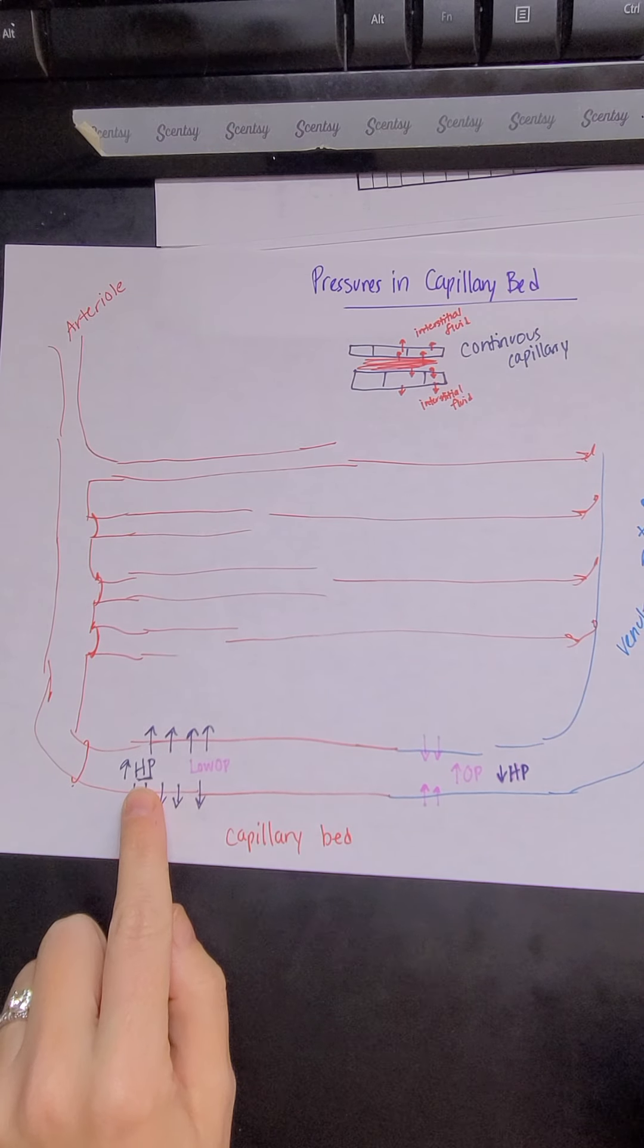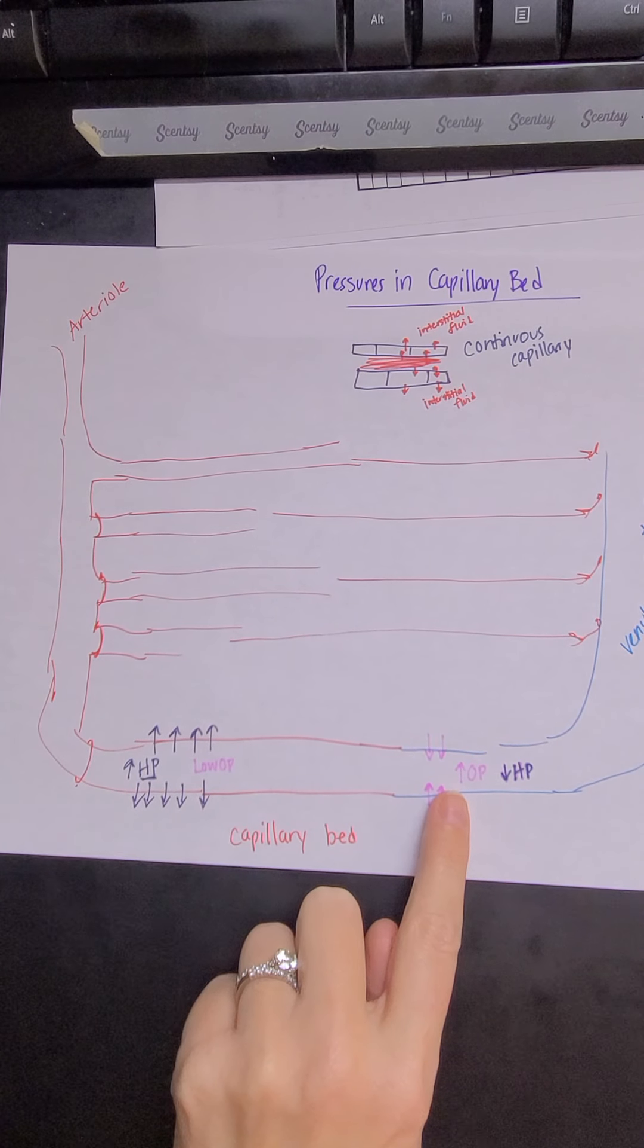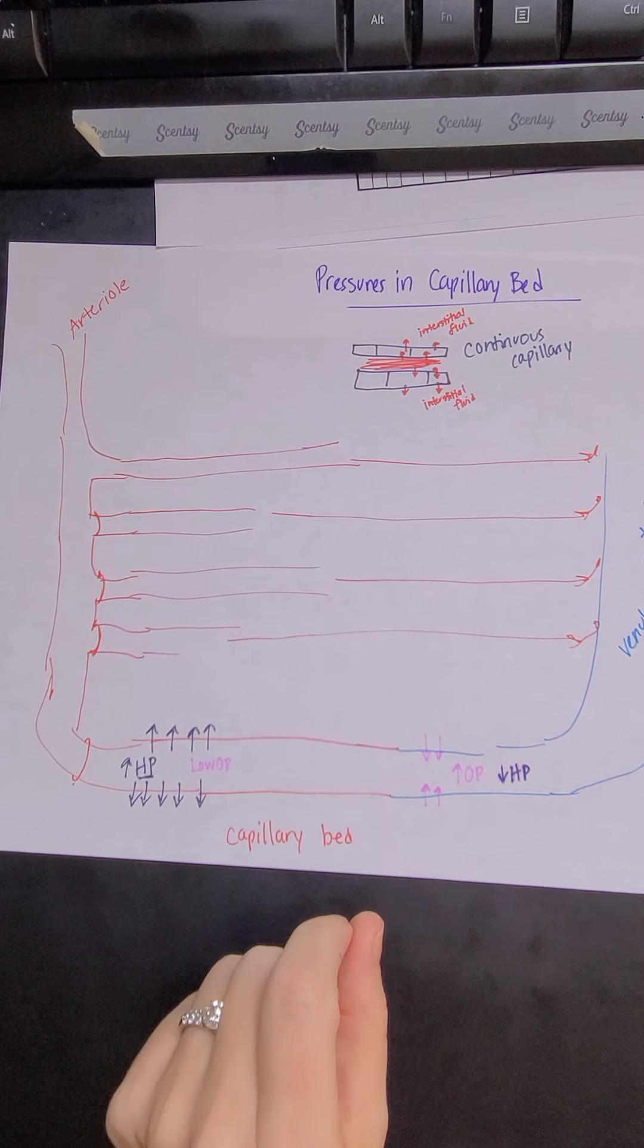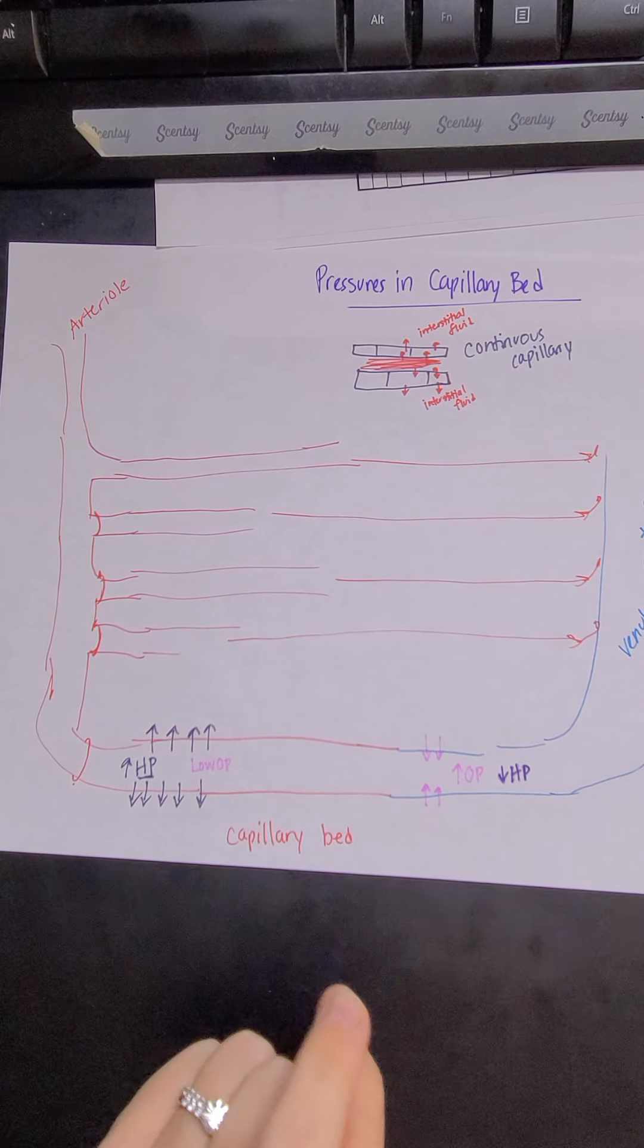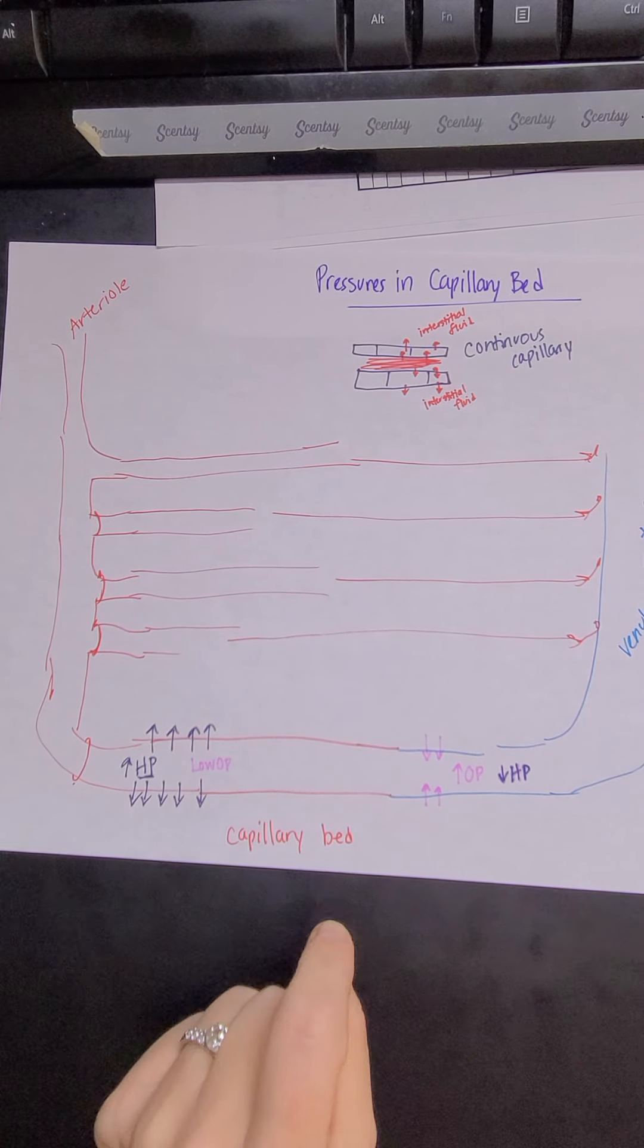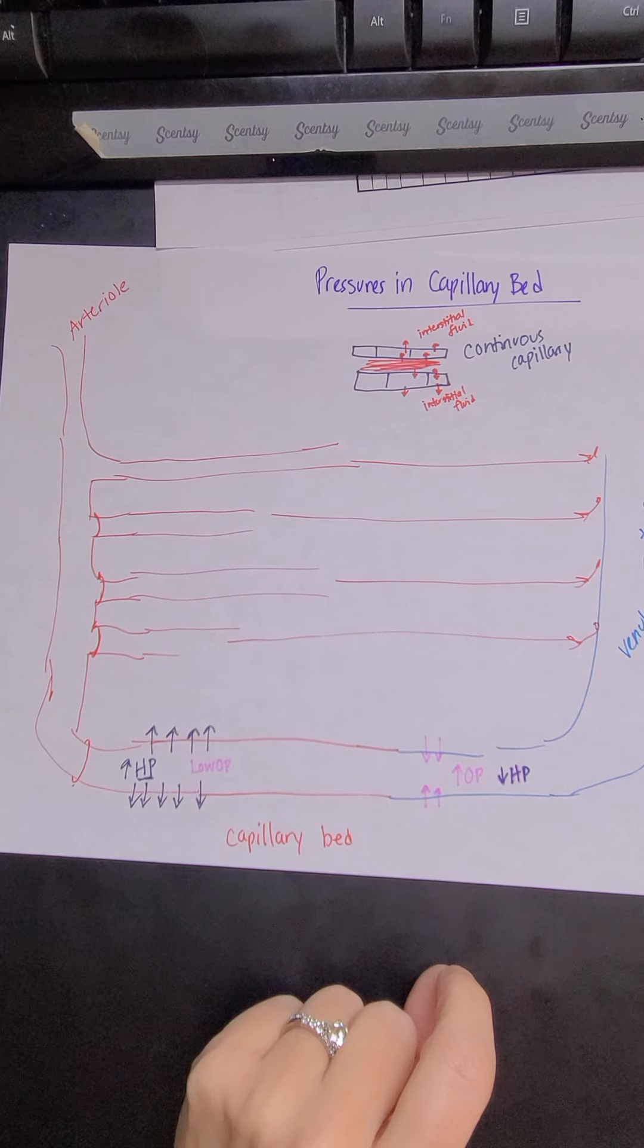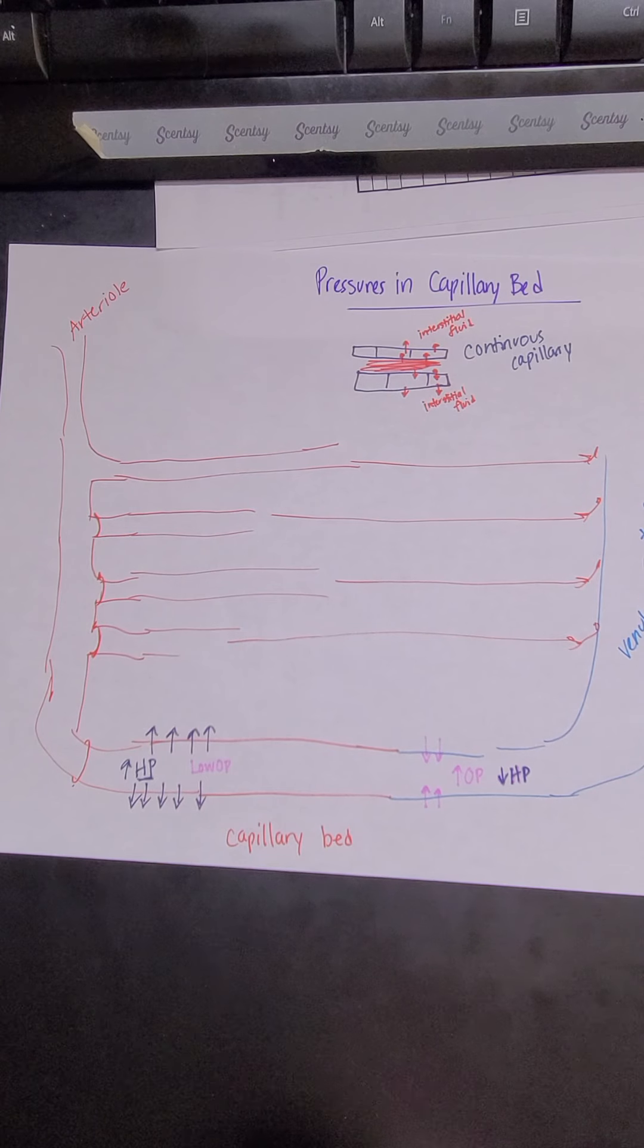And so hydrostatic pressure, I always think of hydrostatic pressure as the pushing and osmotic pressure as a pulling. Hydrostatic pressure is pushing out. Osmotic pressure is pulling in. It's important if you go by that motto, it's important that you understand where is out and where is in, right? I say that from the perspective of the blood. Hydrostatic pressure is pushing out of the blood and therefore out of the capillary. Osmotic pressure is pulling into the blood and therefore into the capillary. So that's how I remember those things.